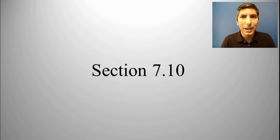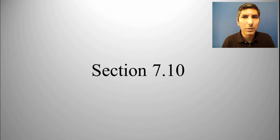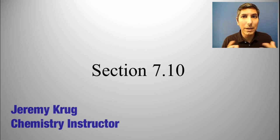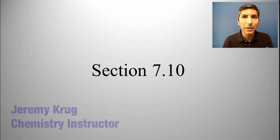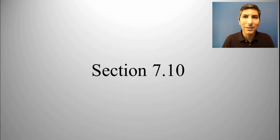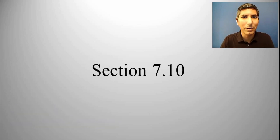Hi there, I'm Jeremy Krug, and in this video we're going to take a look at AP Chemistry Unit 7, Section 10, which is all about what happens if you have a mixture that's not necessarily at equilibrium — how you can determine in which direction that mixture is going to go, toward the reactants or toward the products.